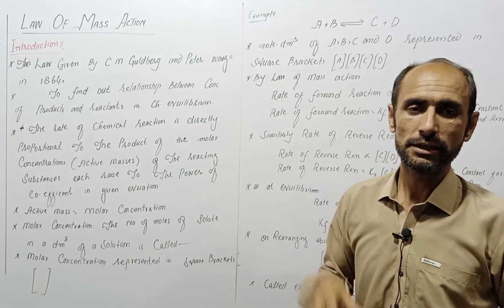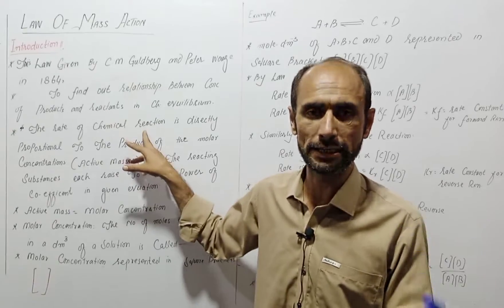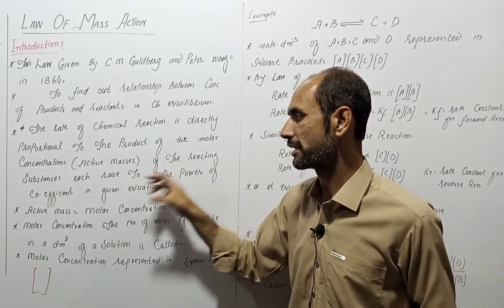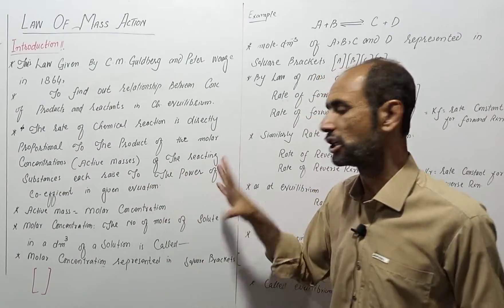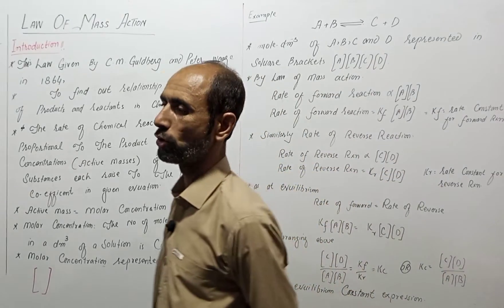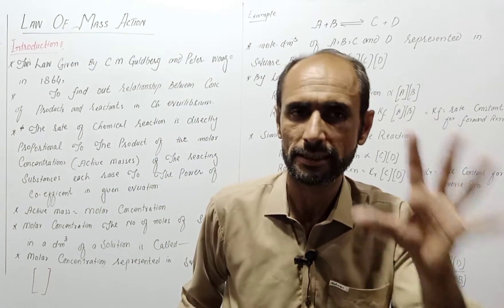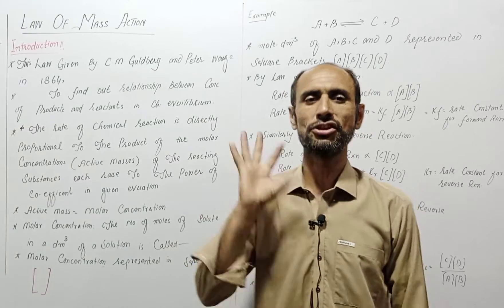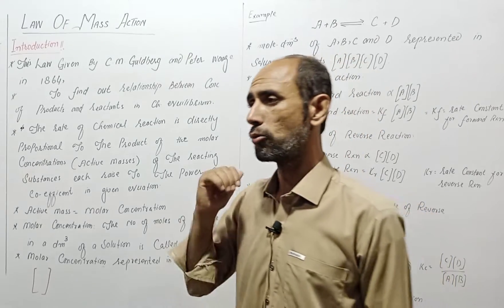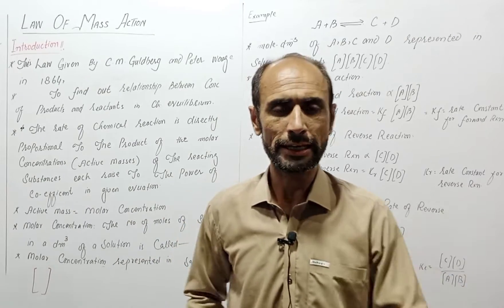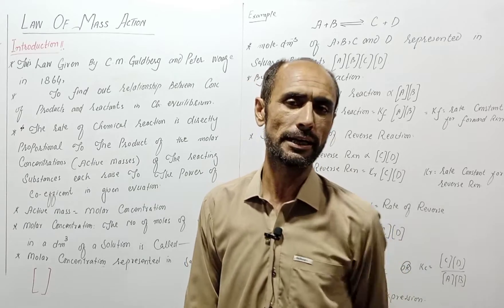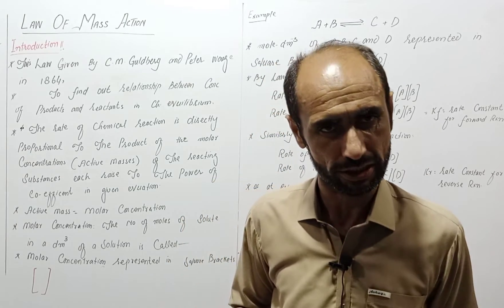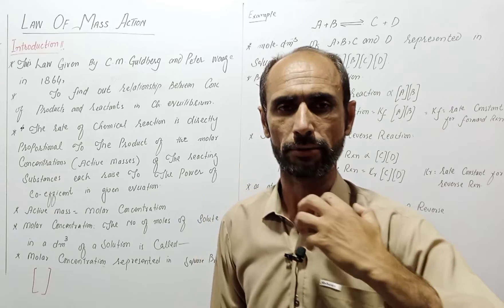The statement of the Law of Mass Action: the rate of a chemical reaction is directly proportional to the product of the molar concentration — the active mass — of reacting substances, each raised to the power of its coefficient in the given equation. In summary, the rate or speed of a chemical reaction depends on the concentration of reactants.